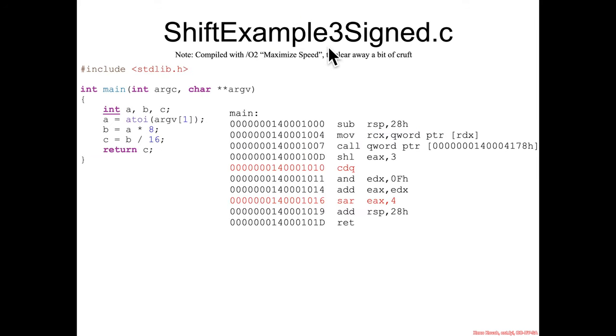So the previous shift example 2 unsigned.c makes way for shift example 3 signed.c. We just change this over to an int instead of an unsigned int, and that creates some new assembly instructions here.